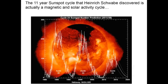The 11-year sunspot cycle that our friend the pharmacist Heinrich Schwabe discovered is actually a magnetic and solar activity cycle. The hot gas, prominences that are loops of hot gas above the sun's surface, eruptions or solar flares, all of this activity follows this magnetic cycle of about 11 years.